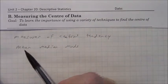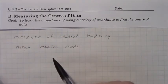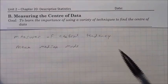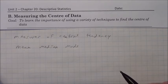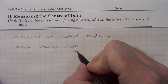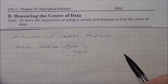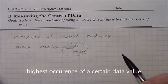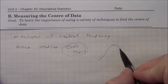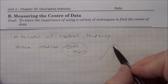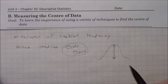The mean is basically just like the average, which most of you are familiar with. The mode — just think of the word 'most.' Mode and most. That's the part of the data that has the most values attributed to it. In the distribution curve, the mode would be right at the peak of the distribution — that's the highest occurrence of that one value.